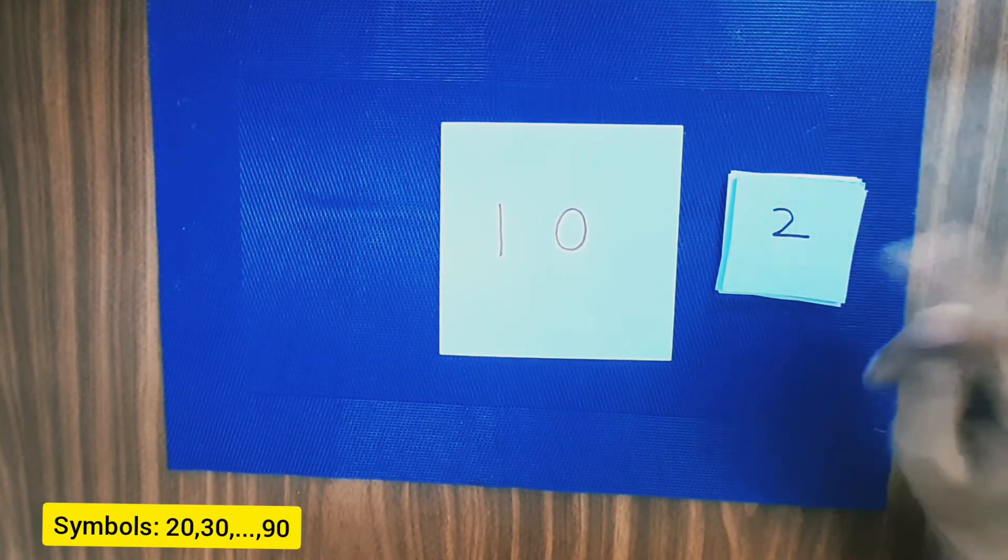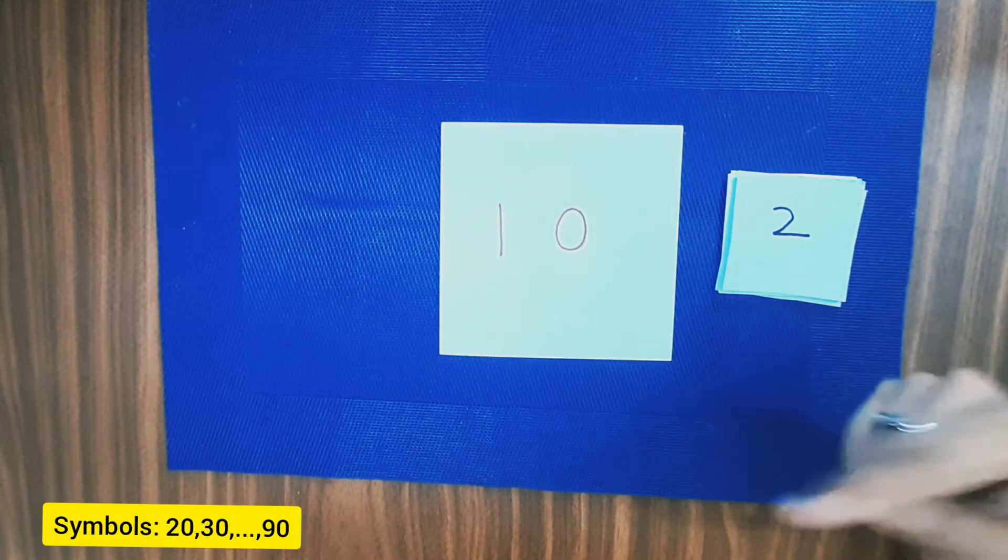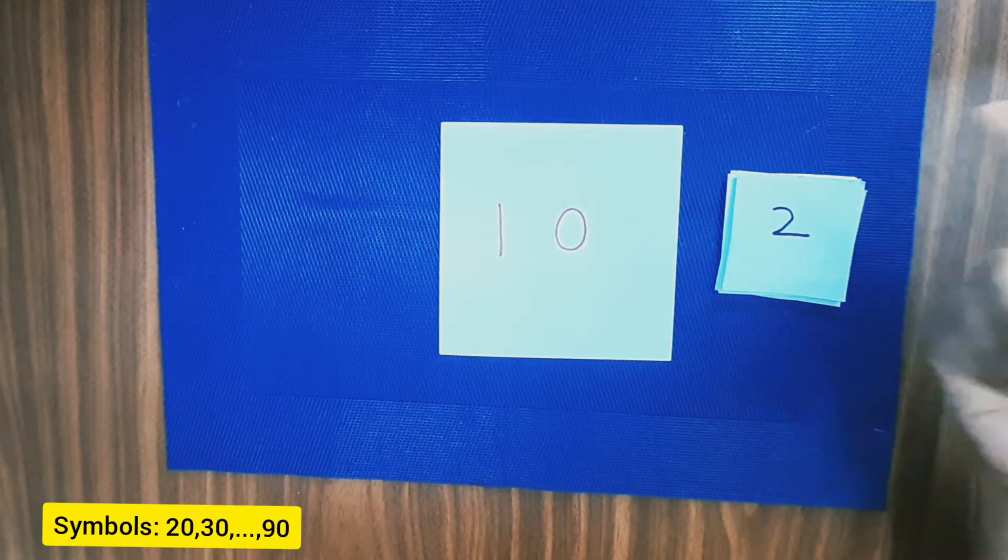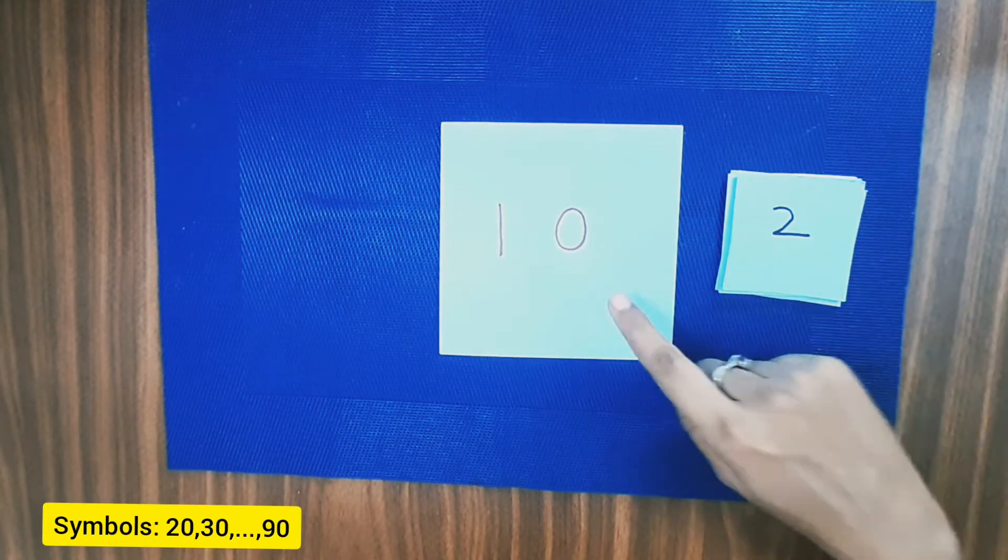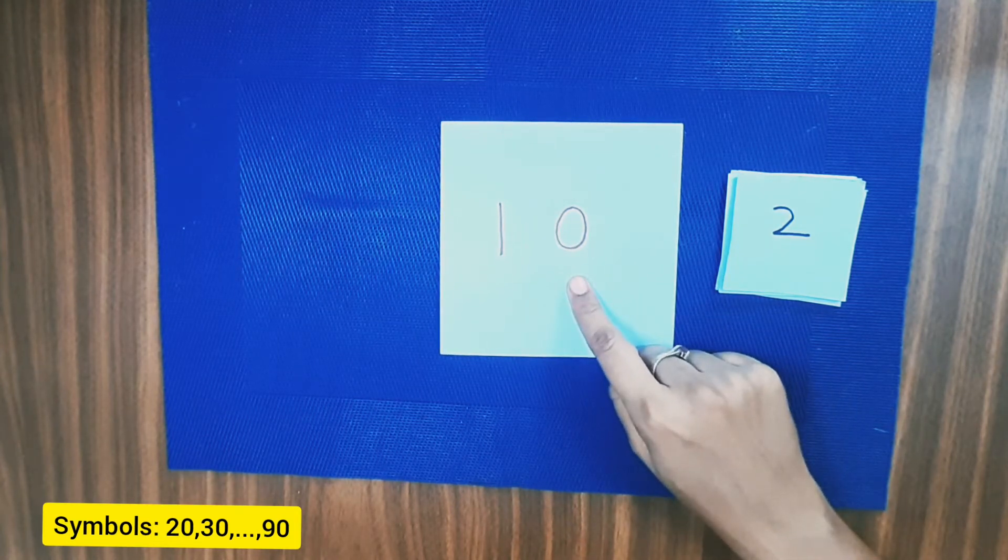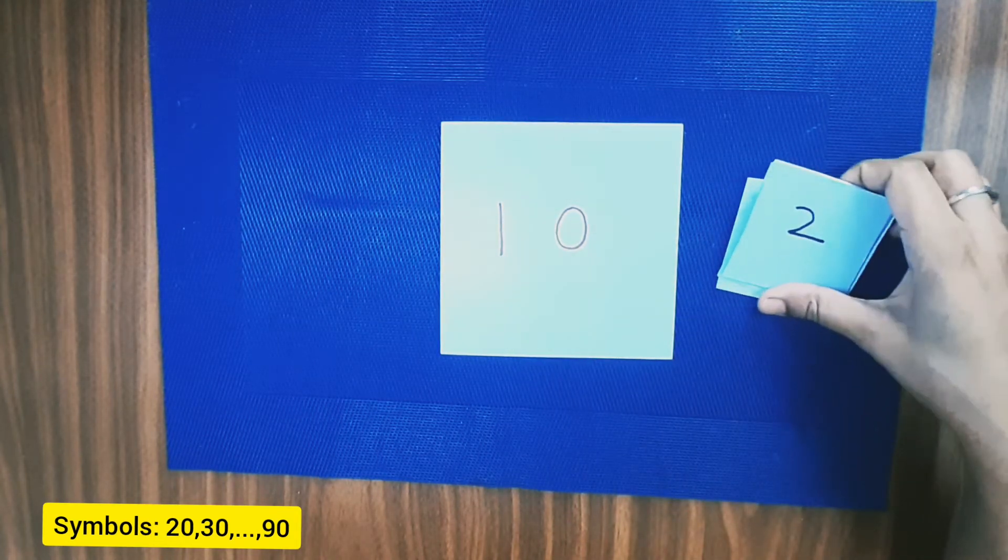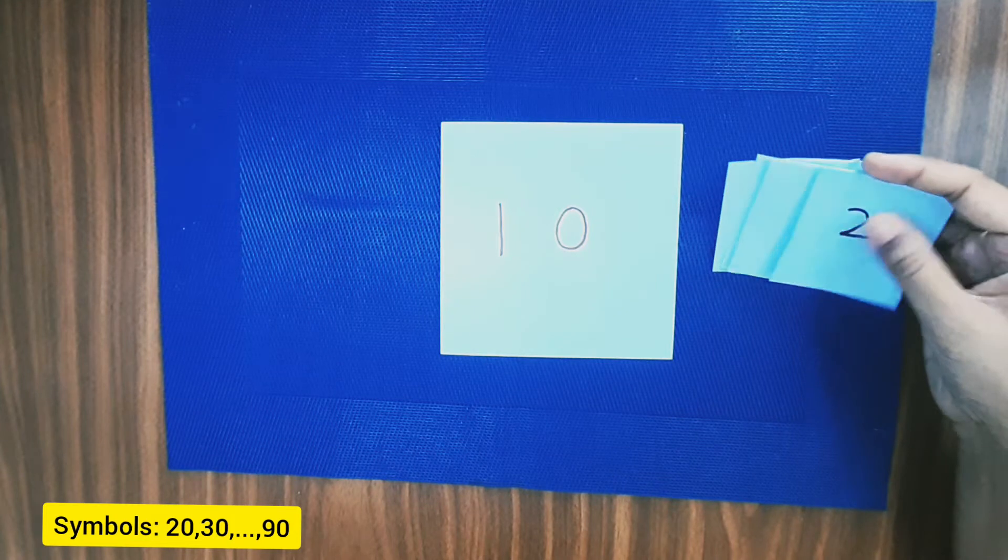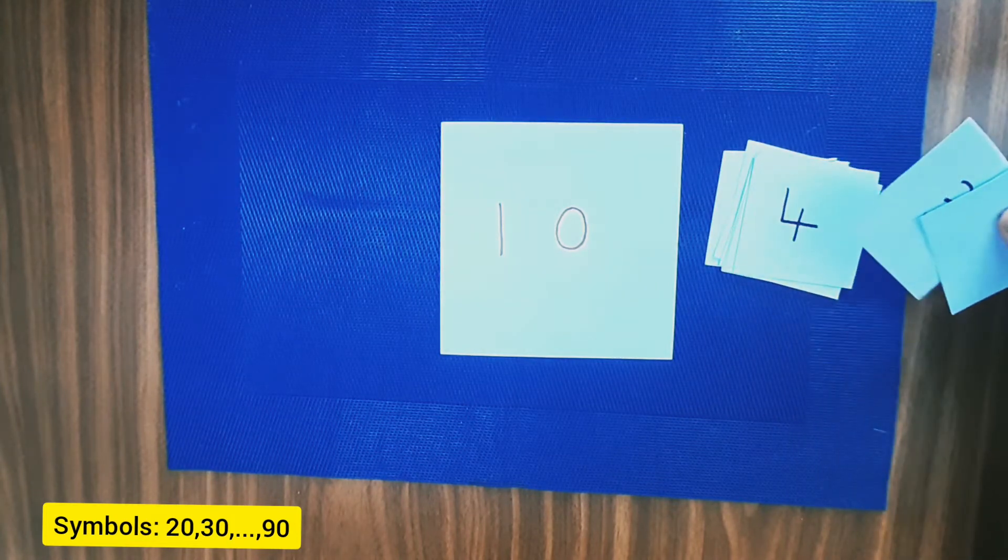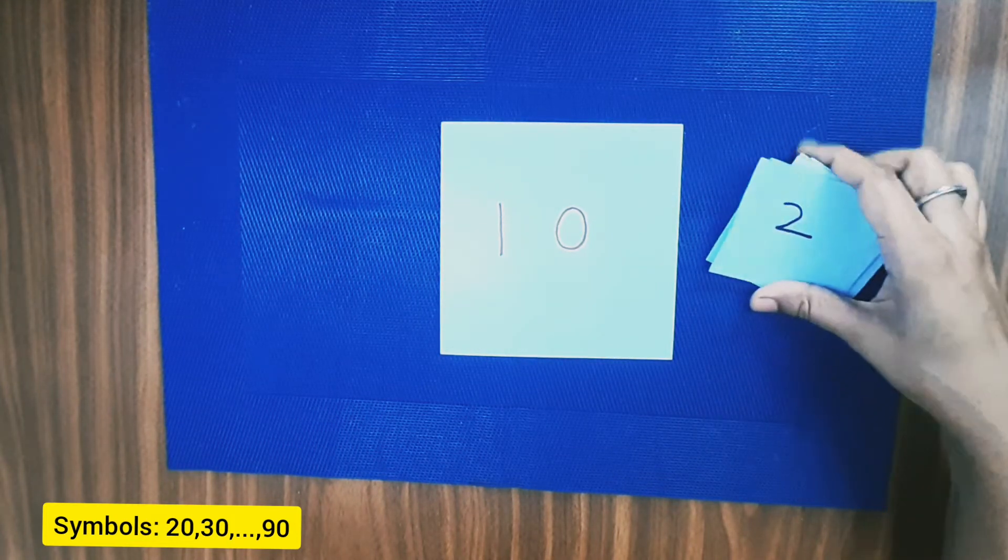After showing that, we can introduce the symbols for the same numbers 20, 30 till 90. For this we need a big card where I have written 10 and I need some 8 cards where I have written 2, 3, 4, 5, 6, 7 till 9.